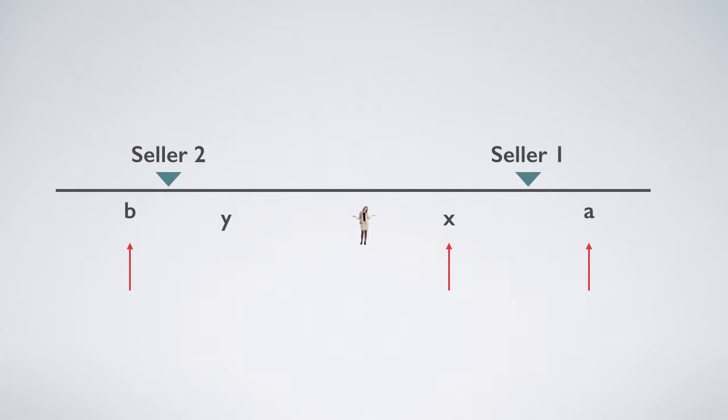X is the distance from a customer to the first seller. Y is the distance from the same customer to the second seller. So A plus X plus Y plus B equals L, the total length.